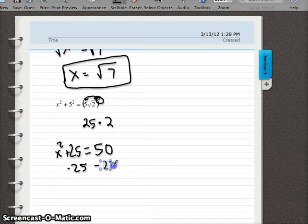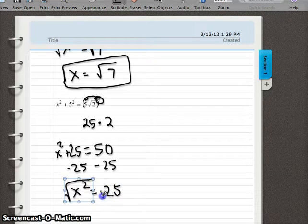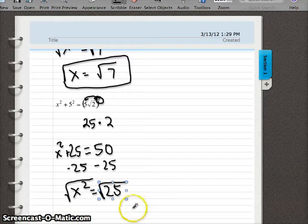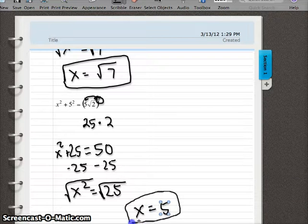So to get x squared by itself, subtract 25. And we get x squared equals 25. And by now, hopefully you know what the square root of 25 is. So if we square root both sides, we get x equals 5. That's our final answer.